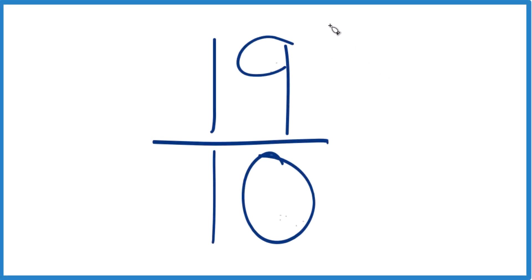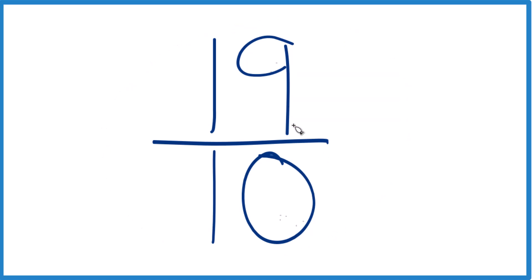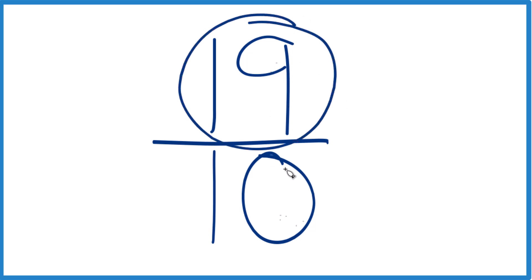Let's simplify this fraction here, 19 tenths, and then let's write it as a mixed number. So 19 tenths — when we simplify a fraction, we want to find a whole number that goes evenly into both 19 and 10.